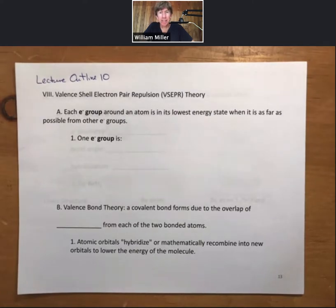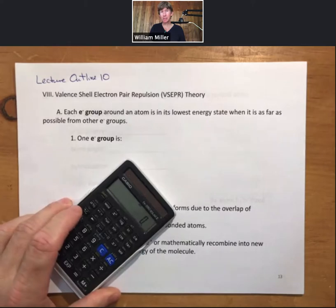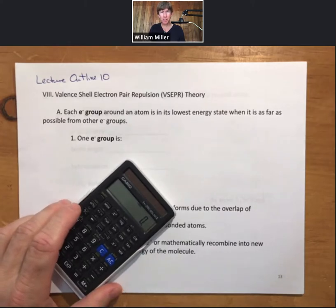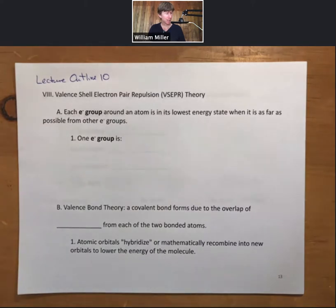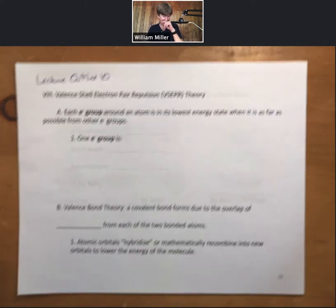This is lecture outline 10, recording number 4, starting with page 13. I've still got my calculator here, however, we haven't used it, and I don't think we will this entire lecture outline. Still got my periodic table handy, always useful.